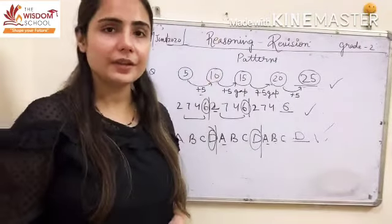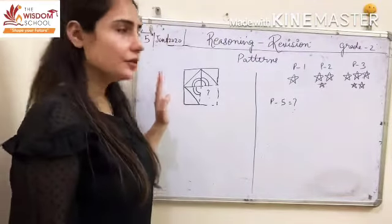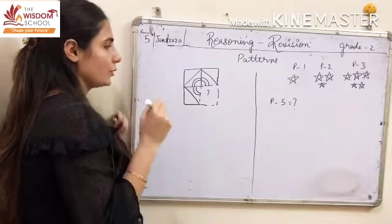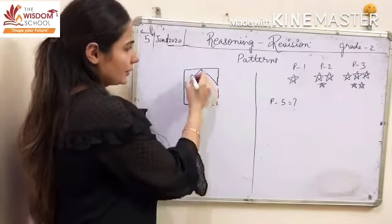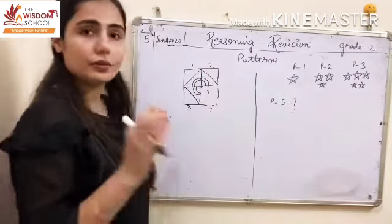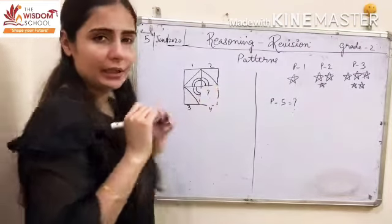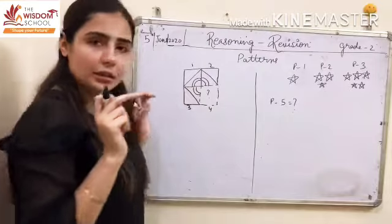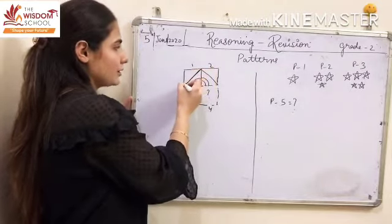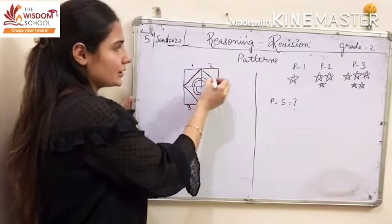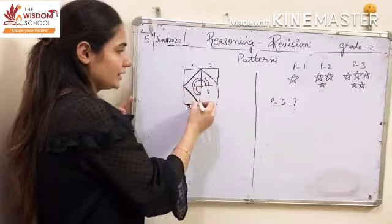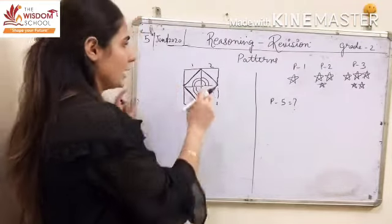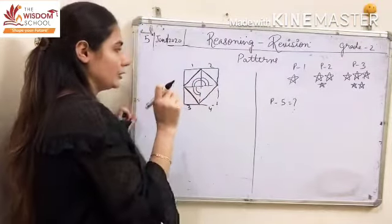Now, children, we will do patterns in figures or shapes. In these questions of patterns in figures, we have taken two types of questions. We solved the first type in our earlier lecture. Look here — one, two, three and four boxes are given, but the fourth box is incomplete. We have to complete the fourth box by checking our first, second and third boxes.